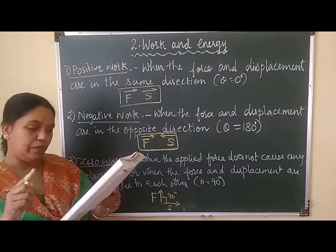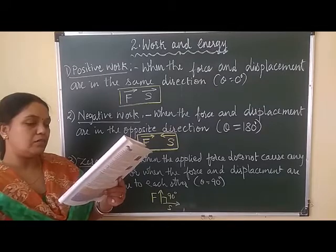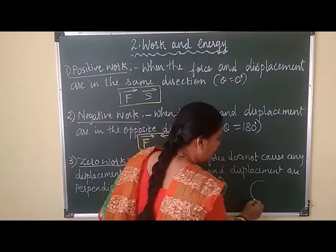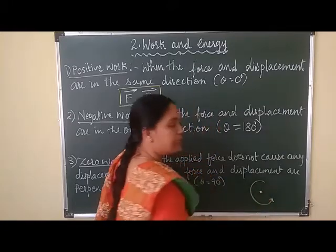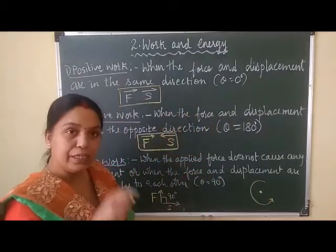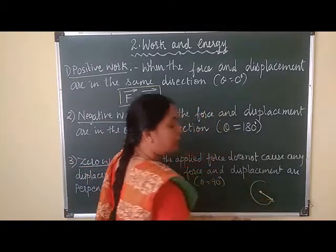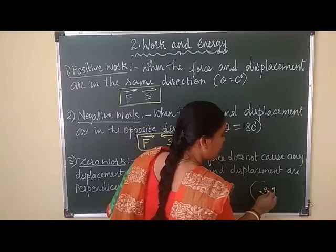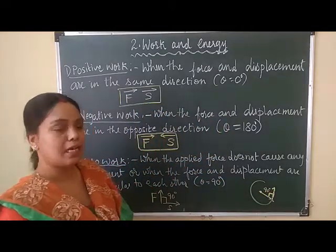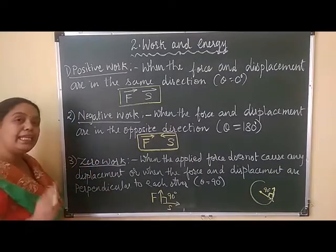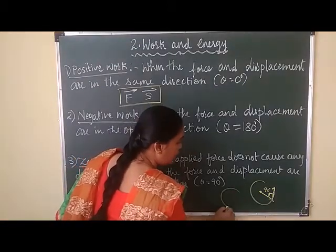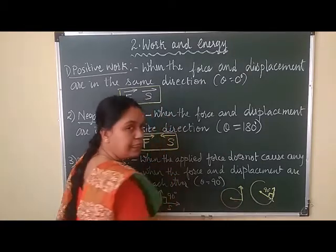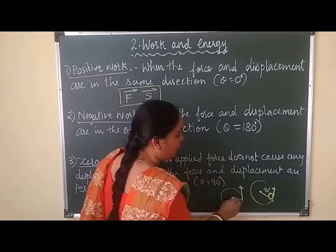Next: tying a stone to one end of a string and swinging it round and round by the other end. When you are swinging the stone, the force is applied on the string and the displacement is making a 90 degree angle. So this is an example of zero work. In any circular motion, the direction of displacement makes a 90 degree angle with the force applied from the center.